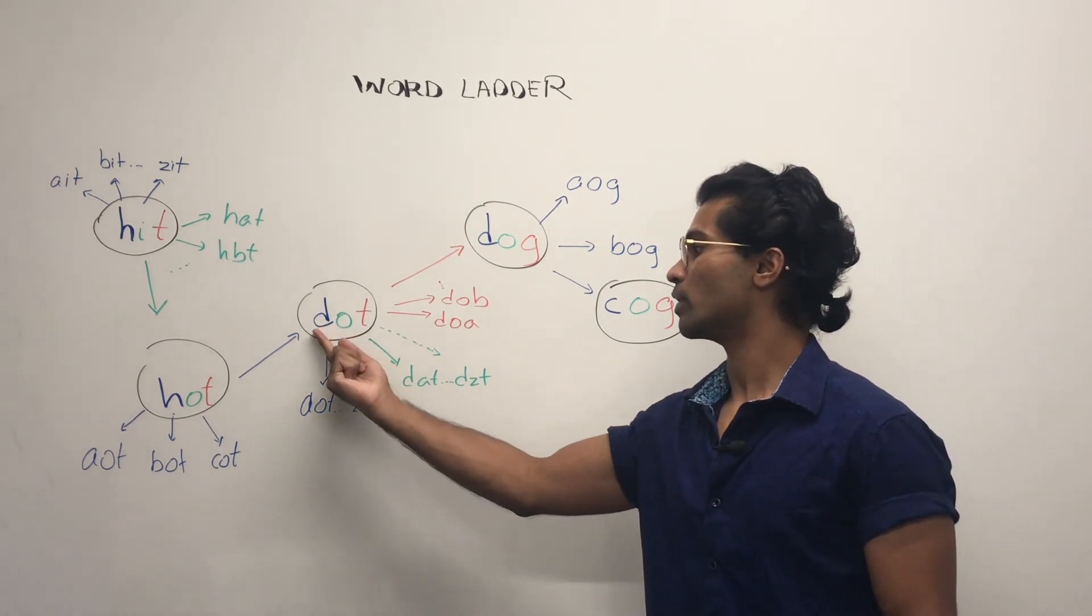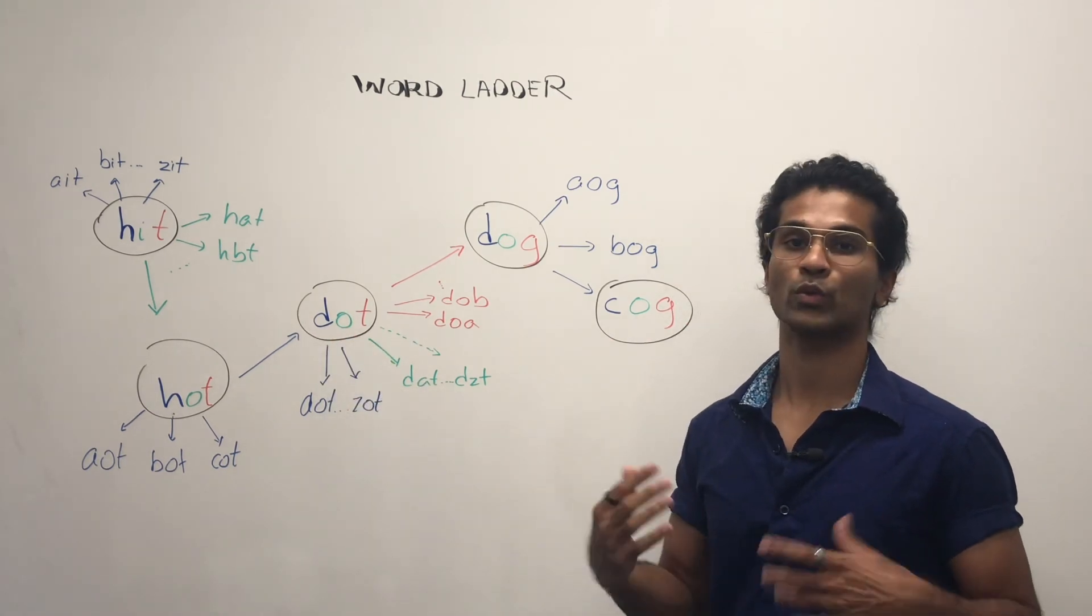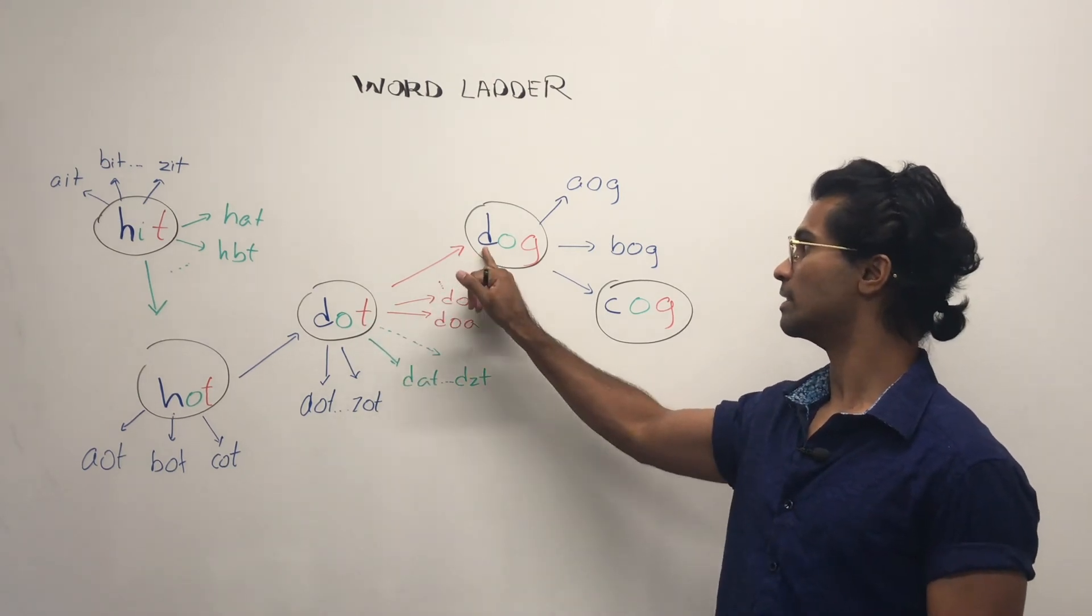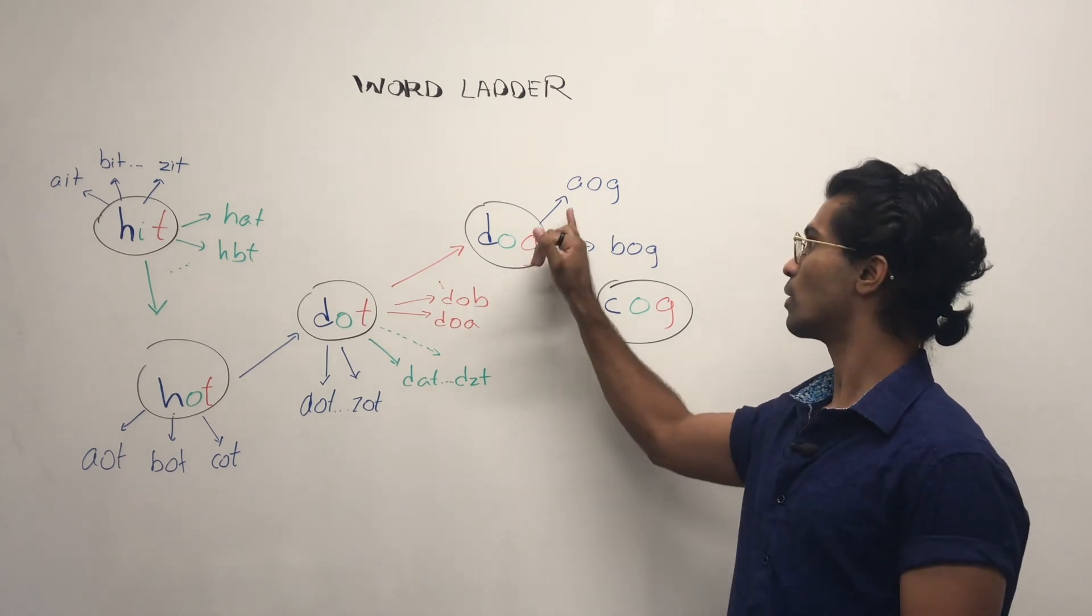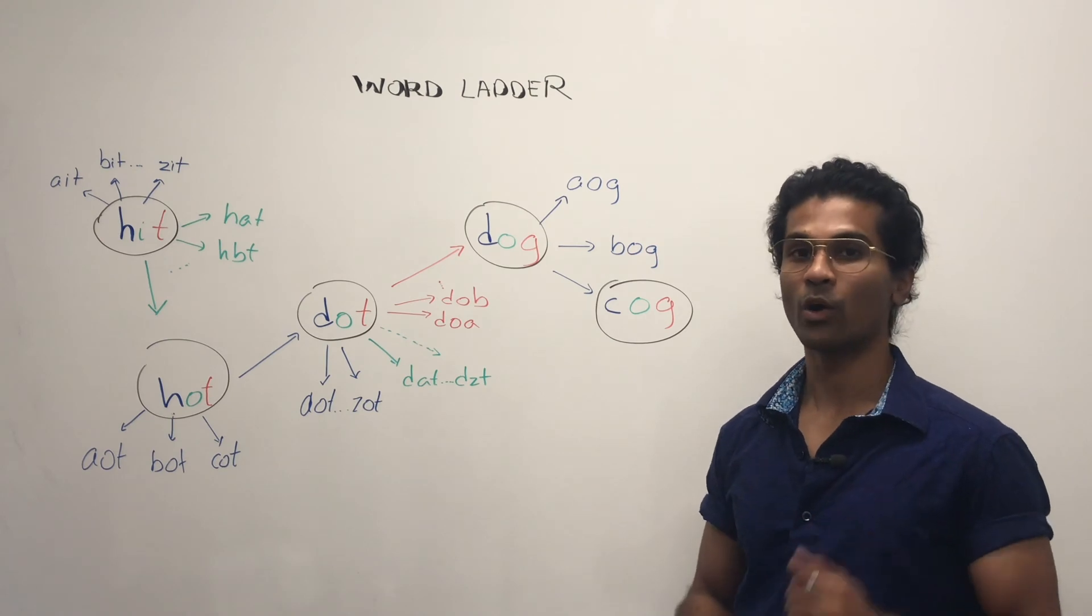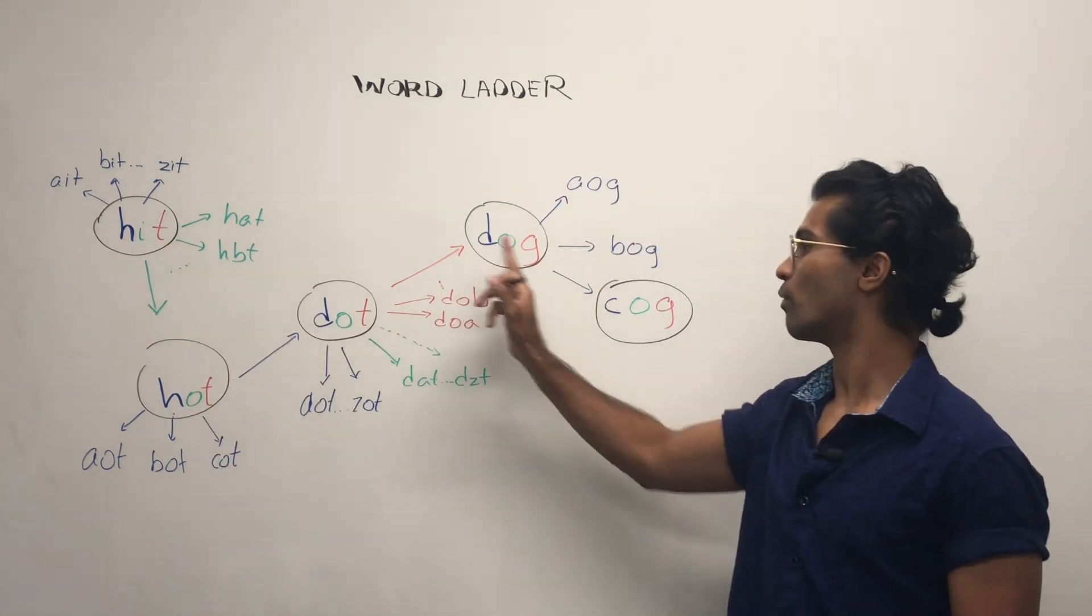Similarly we check it out for letter D, we swap out the different neighbors. For letter O swap out the neighbors and for letter T we swap out the neighbors until we hit DOG. Finally we swap out the letters so AOG, BOG and COG and we hit our end word. So our word ladder in this case is going to be one, two, three, four, five.